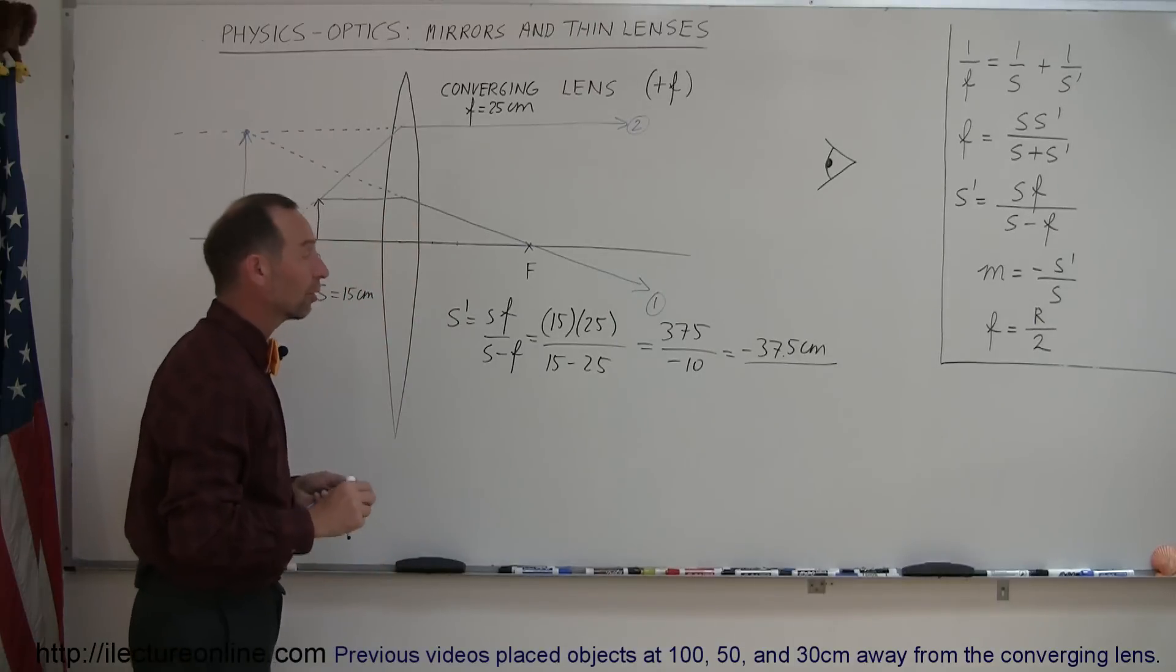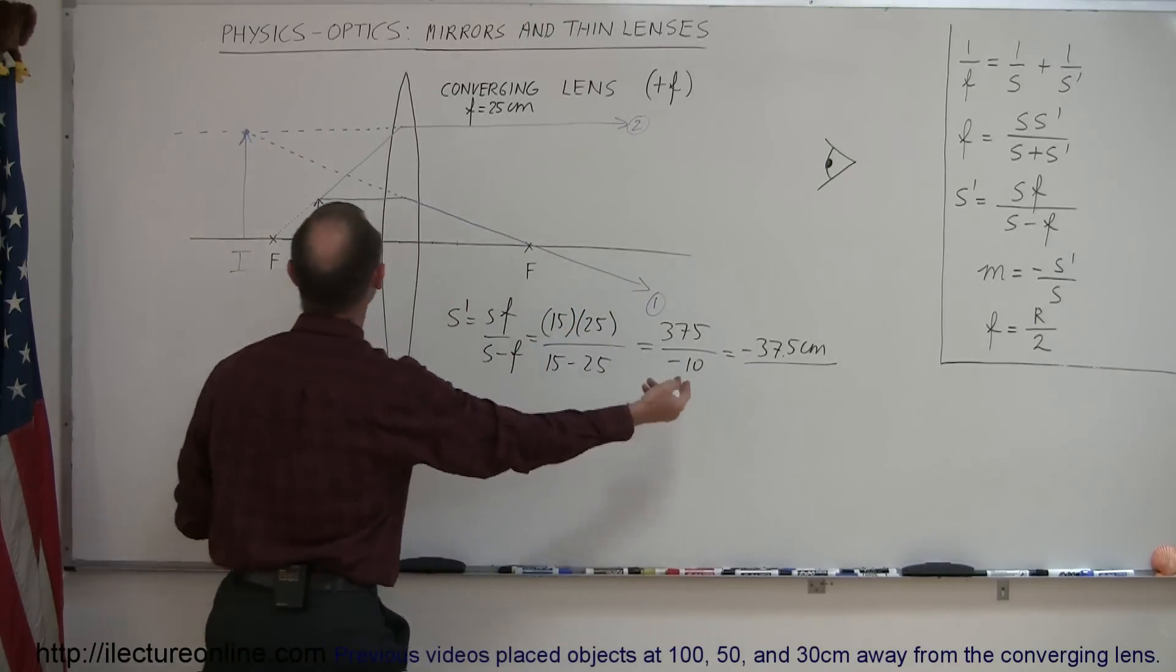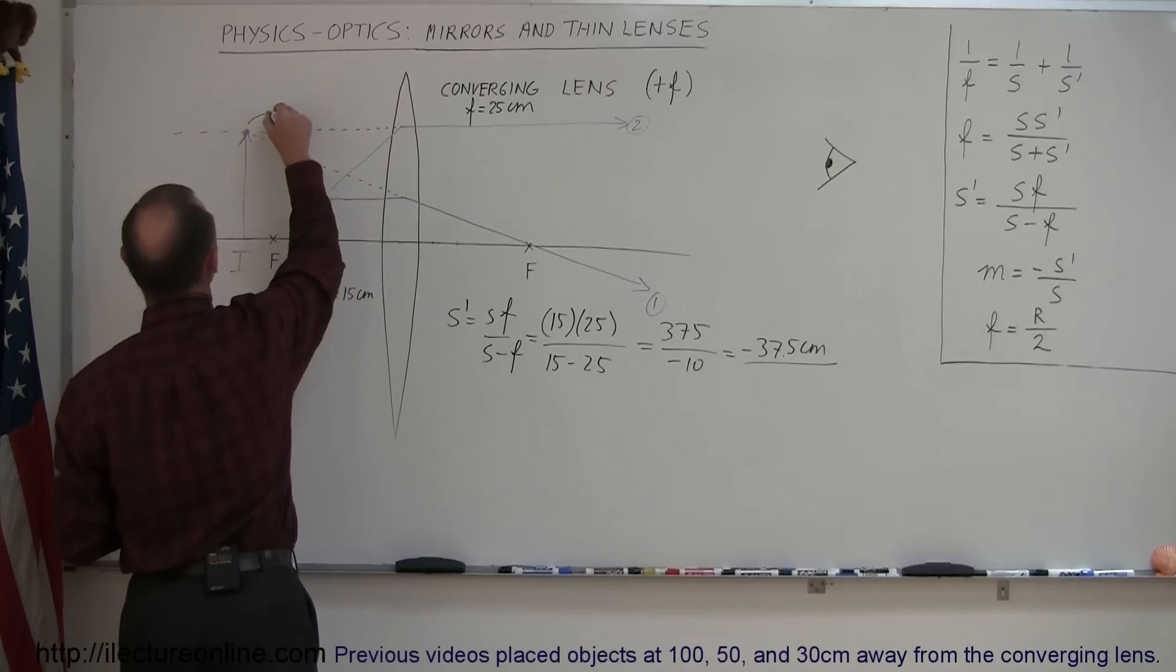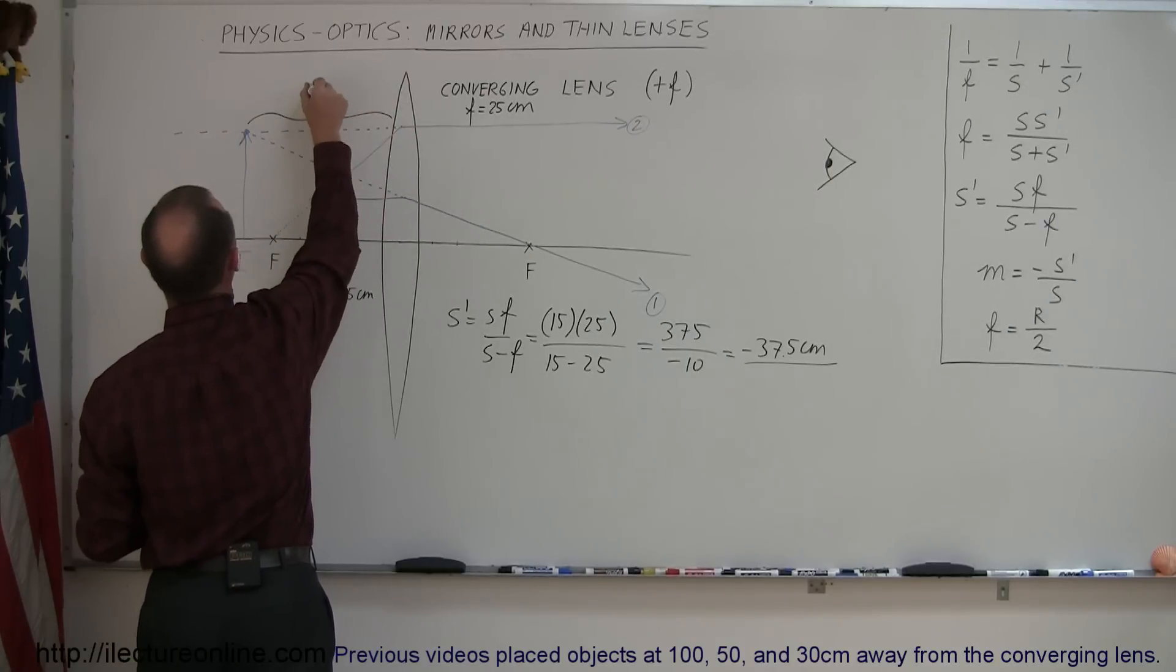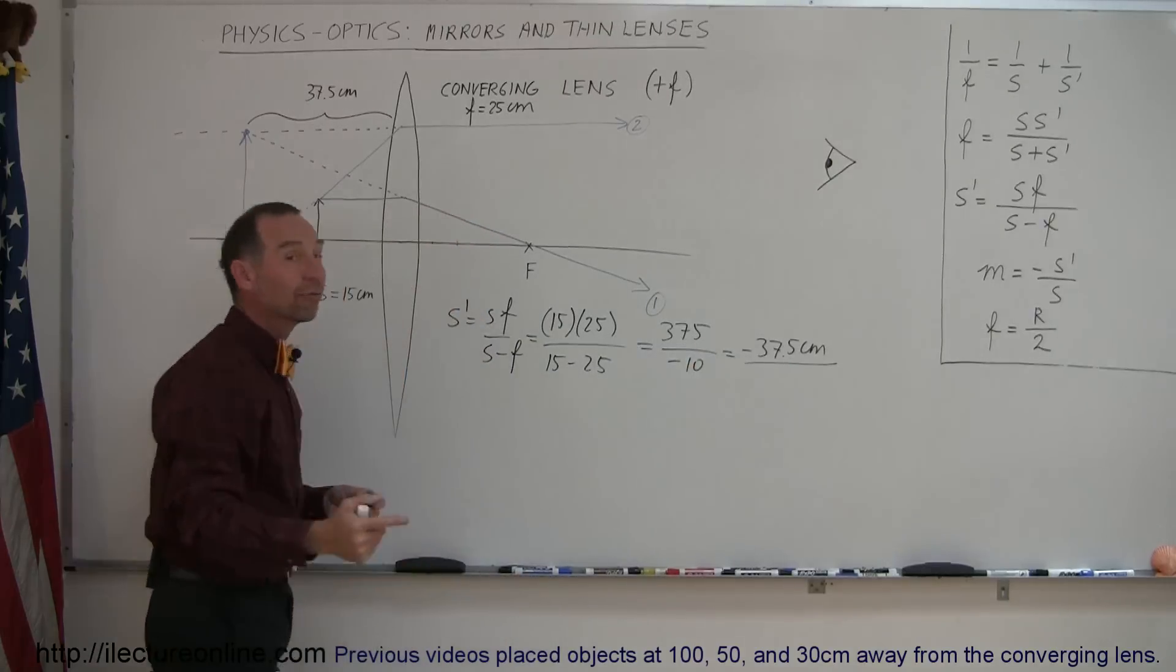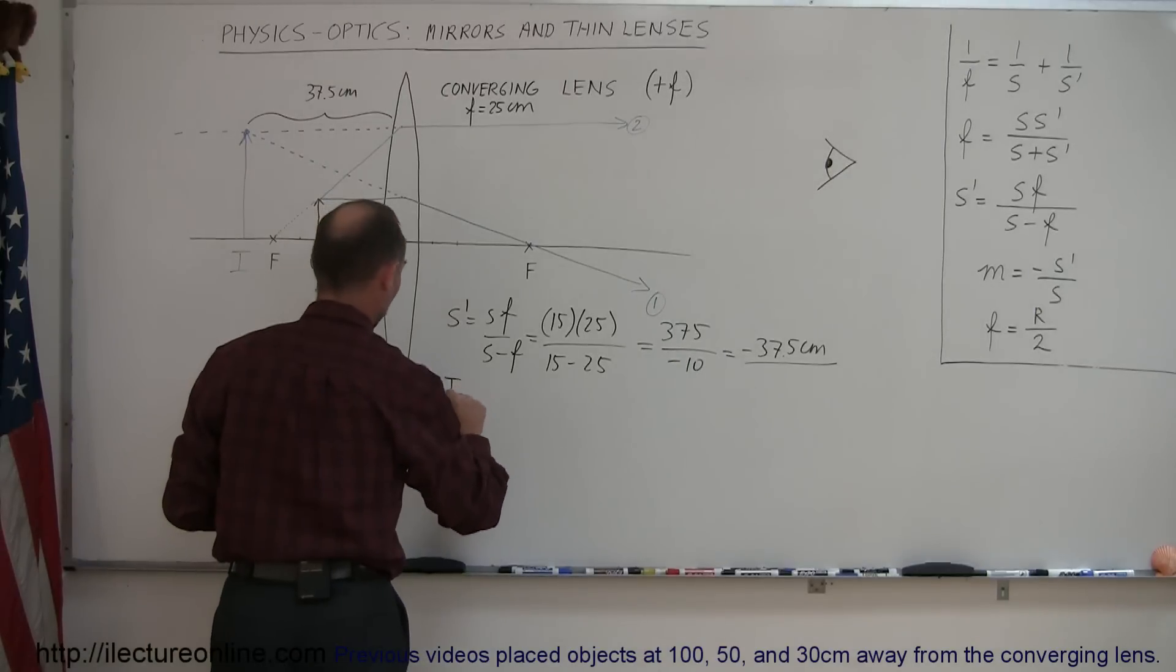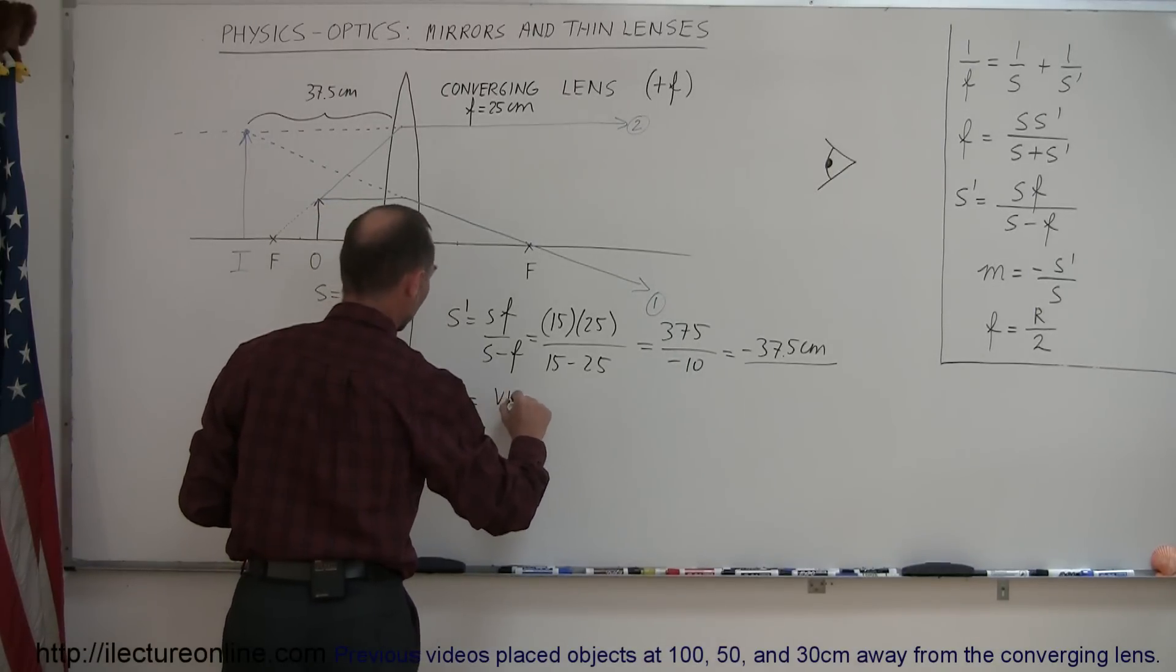All right, so we found our image. It's 37.5 centimeters from the lens. But since it's a negative quantity, it places it in front of the lens. So this distance right here is 37.5 centimeters. But the negative here indicates that it's in front of the lens, meaning it's a virtual image. That's why we can write I is virtual.